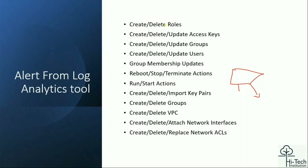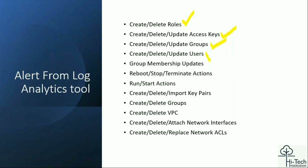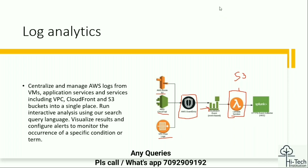From the log analytics tool, you can trigger alerts when somebody creates a resource, deletes a role, or performs any activity. You can monitor all the logs and receive notifications if anything is missed. For example: someone created or deleted an AWS IAM key, created or deleted a group, created or deleted a user, updated a membership, terminated an EC2 instance, started or stopped a specific resource, imported an external key, or deleted a security group or ACL group.